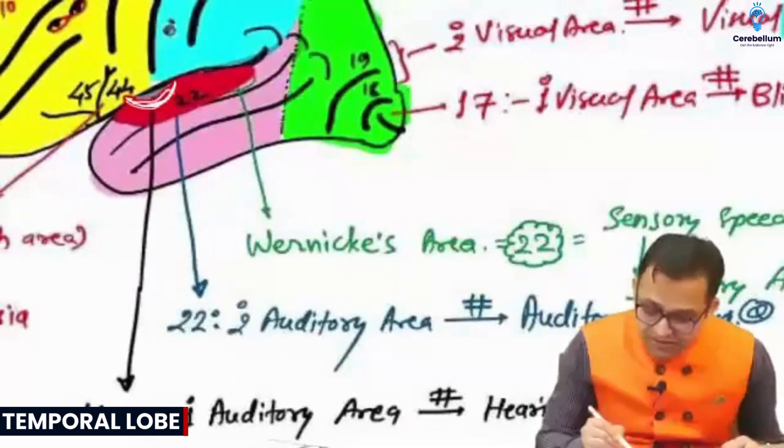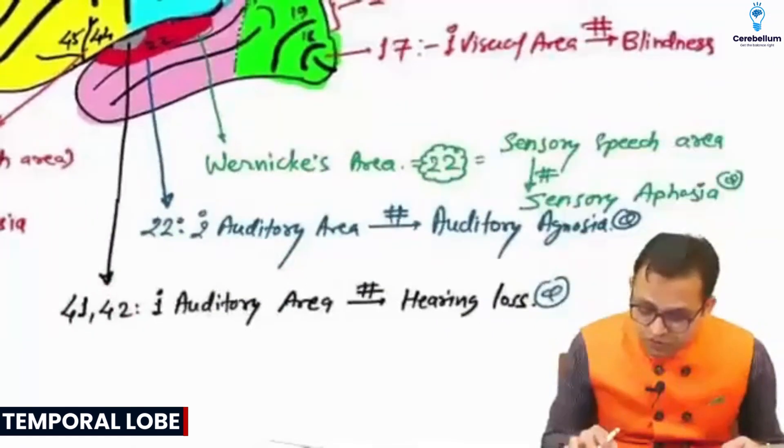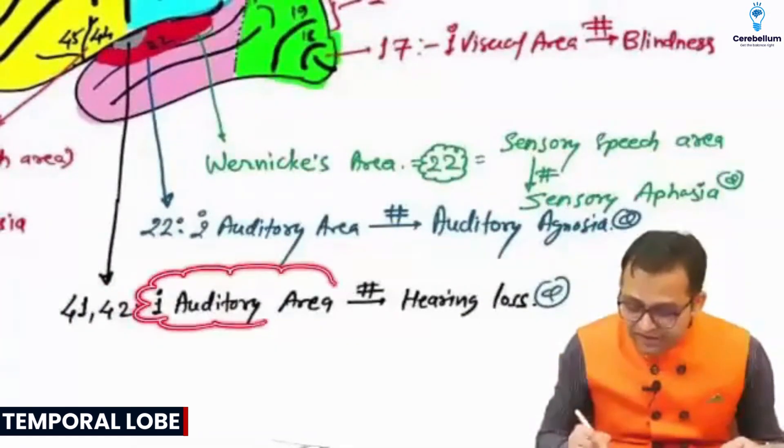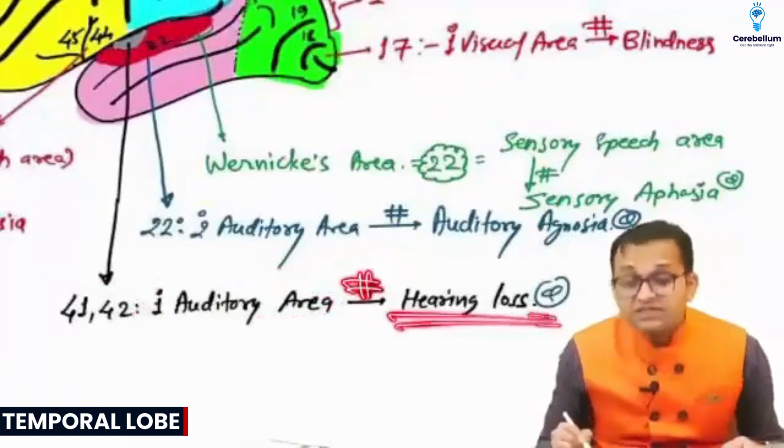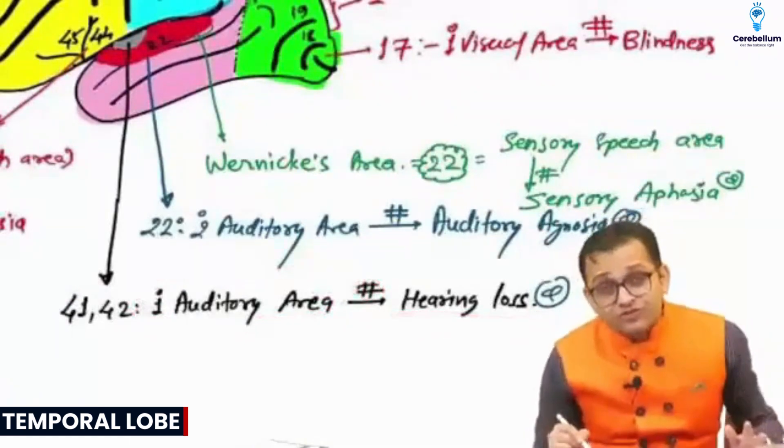Can you see the area number 41 and 42, which is the primary auditory area? If there is damage in this primary auditory area, there is hearing loss.